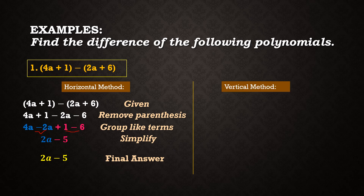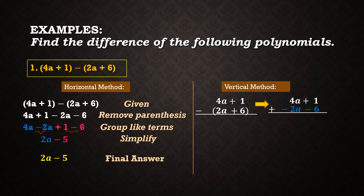Now let us use the same problem but with the vertical method. We write our given: 4a plus 1 minus 2a plus 6. We rewrite by copying our minuend and changing the operation to addition. Then we write the opposite signs for the subtrahend terms: from positive 2a we write negative 2a, and positive 6 becomes negative 6. We apply addition: 4a plus negative 2a is equal to 2a, and positive 1 plus negative 6 is equal to negative 5. Again, our final answer is 2a minus 5.